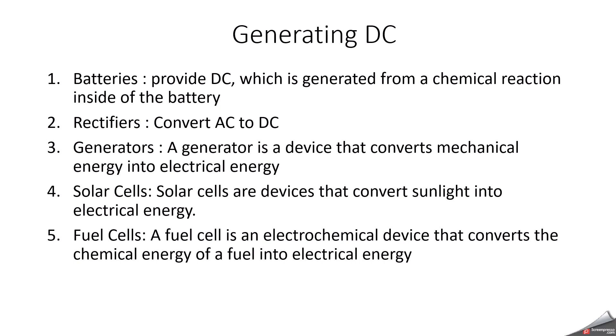First, we can consider battery. Battery is a common source of DC current. Batteries convert chemical energy into electrical energy and provide a constant voltage output.